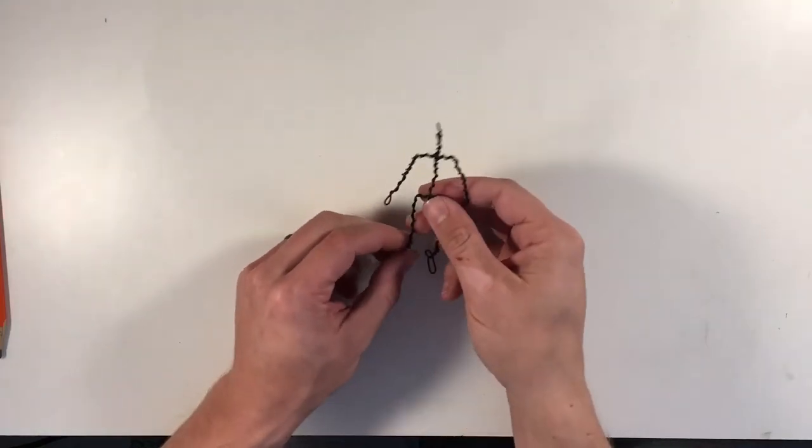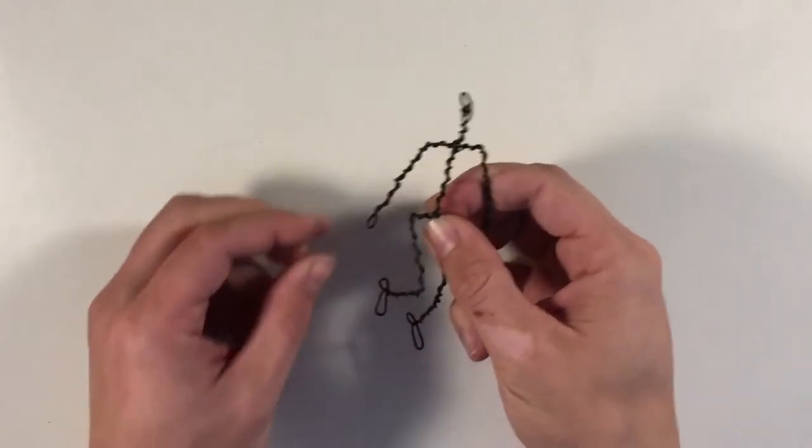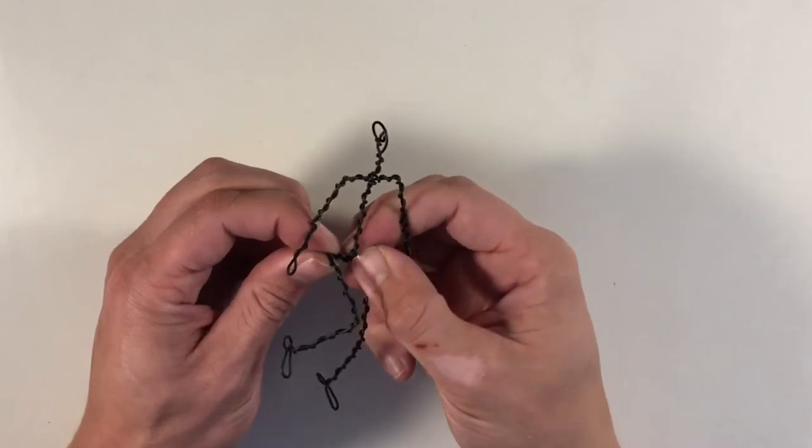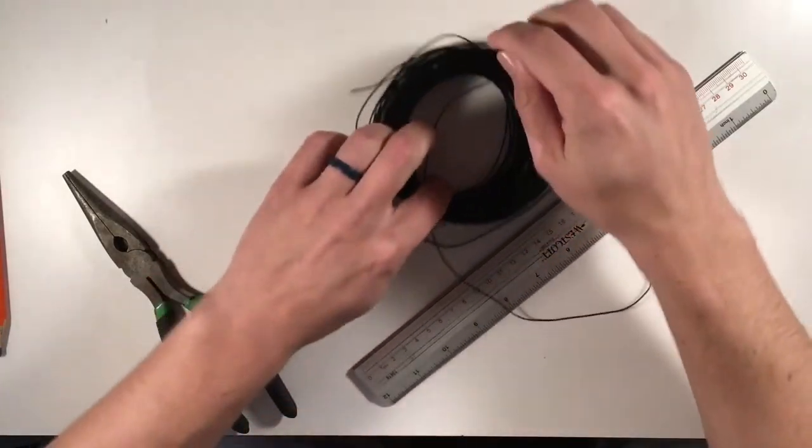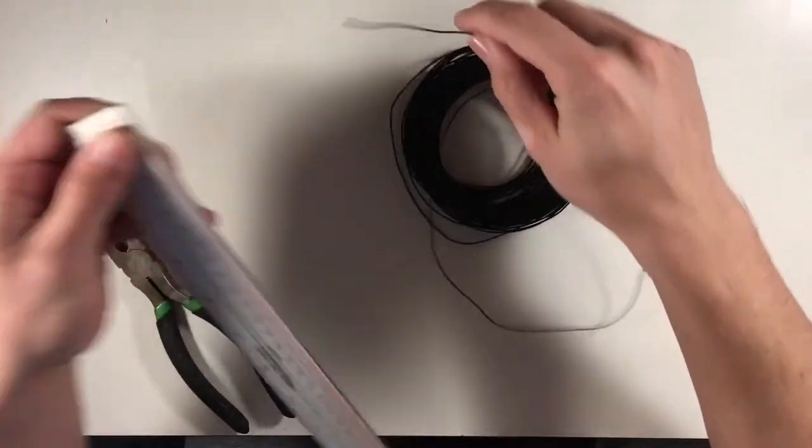In this video I'll go over how to make small wire armatures for figure sculpting. For this I'll be using some thin 20 gauge aluminum wire, a ruler, and some pliers with wire cutters.